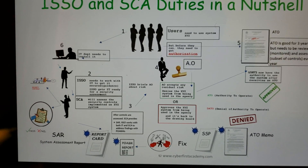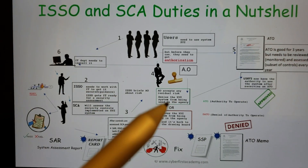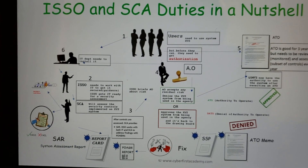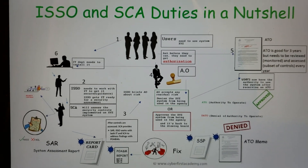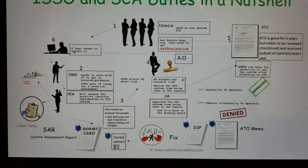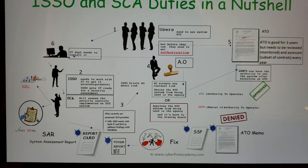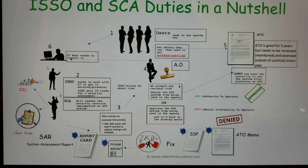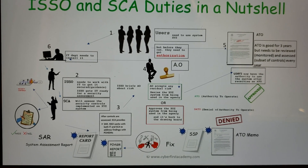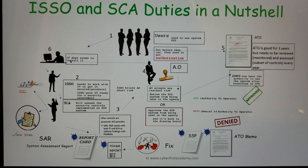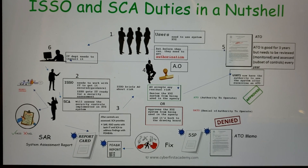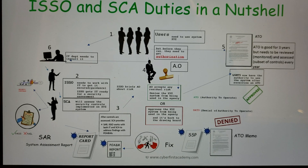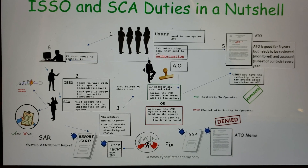If the AO approves the system, they issue an ATO — Authority to Operate. The job in a nutshell involves no technical coding or implementation work. It's purely policy-based and procedure-based, so this is something anyone with a passion for cybersecurity could do.